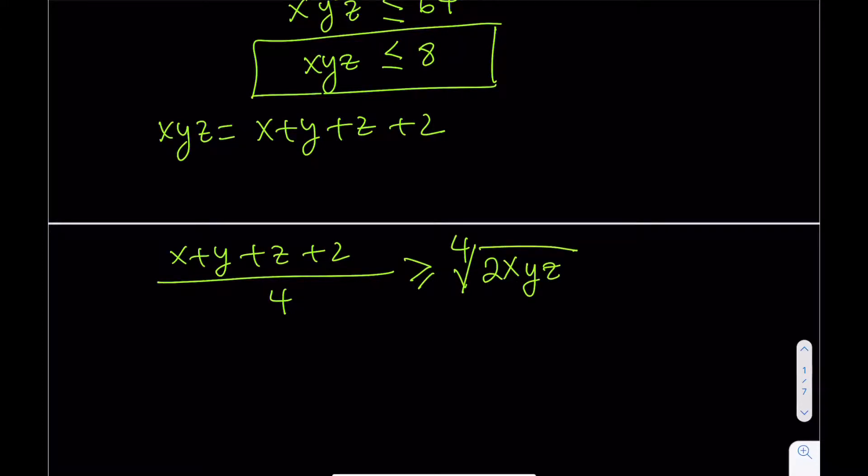Now, we do know that X plus Y plus Z here, X plus Y plus Z plus 2 is the same as XYZ, right? So, we can actually go ahead and set this equal to XYZ. So, let's see what happens here. I'm going to go ahead and replace this one with XYZ. So, XYZ divided by four is going to be greater than or equal to the fourth root of 2XYZ.